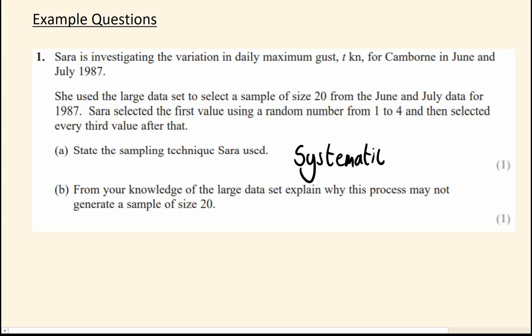Part B. From the large data set, explain why she might not get a sample size of 20. And again, that is the obvious answer. You have data missing occasionally. Not always, but sometimes. So it's worth mentioning that.